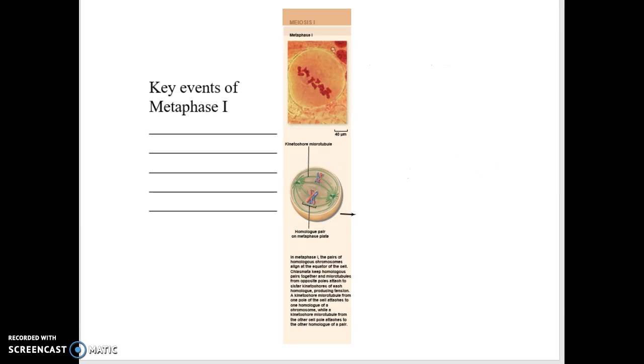So humans, we have 46 chromosomes or 23 pairs. Our 23 pairs of chromosomes will line up during metaphase 1. So you'll have literally 23 pairs of little X's, little chromosomes, going across the center of the cell.